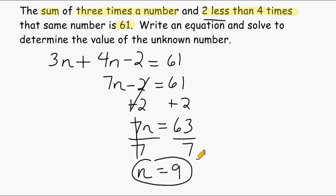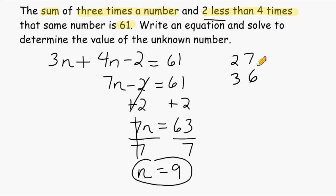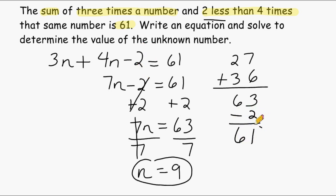Just to verify that n equals nine is in fact the answer, we can plug it into our equation. Three times nine gives us twenty-seven. Plugging nine into the second expression: four times nine equals thirty-six. Adding those two values together gives us sixty-three, and subtracting two from sixty-three gives us sixty-one. So the value of nine works when we plug it into our equation.